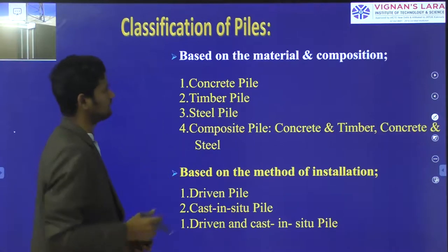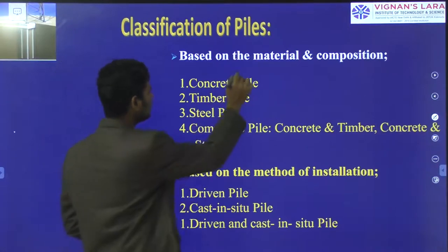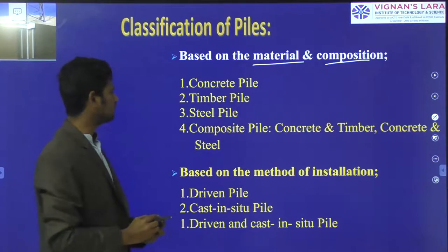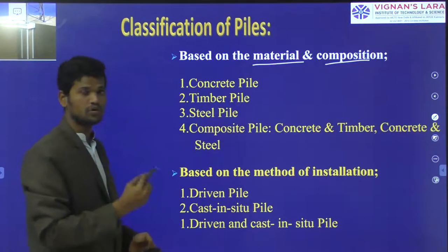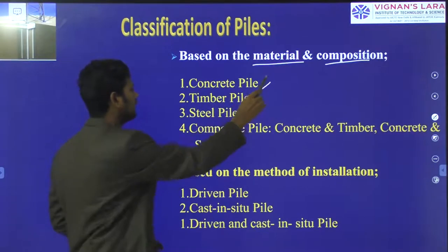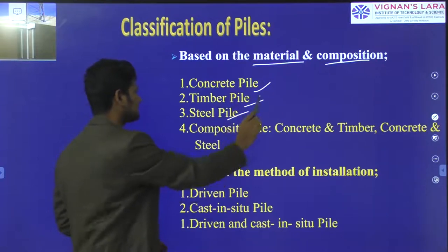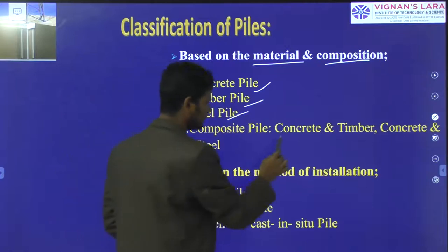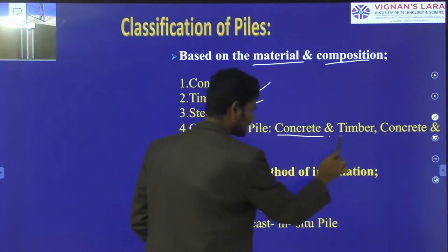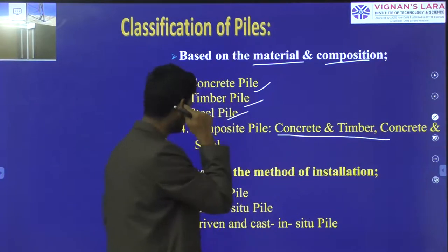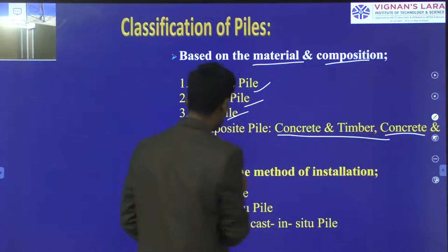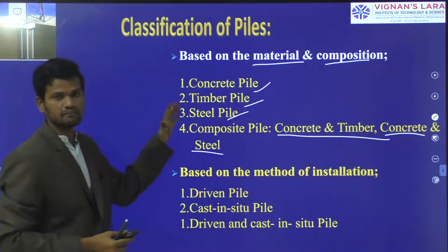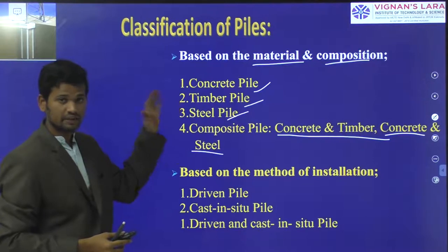Next, we are having the baseline material and composition. Based on material and composition, we are having a few more pile types. That is concrete pile, timber pile, steel pile, and composite pile. Composite pile can be constructed by combination of concrete and timber, or by combination of concrete and steel. These are the types of piles based on material.